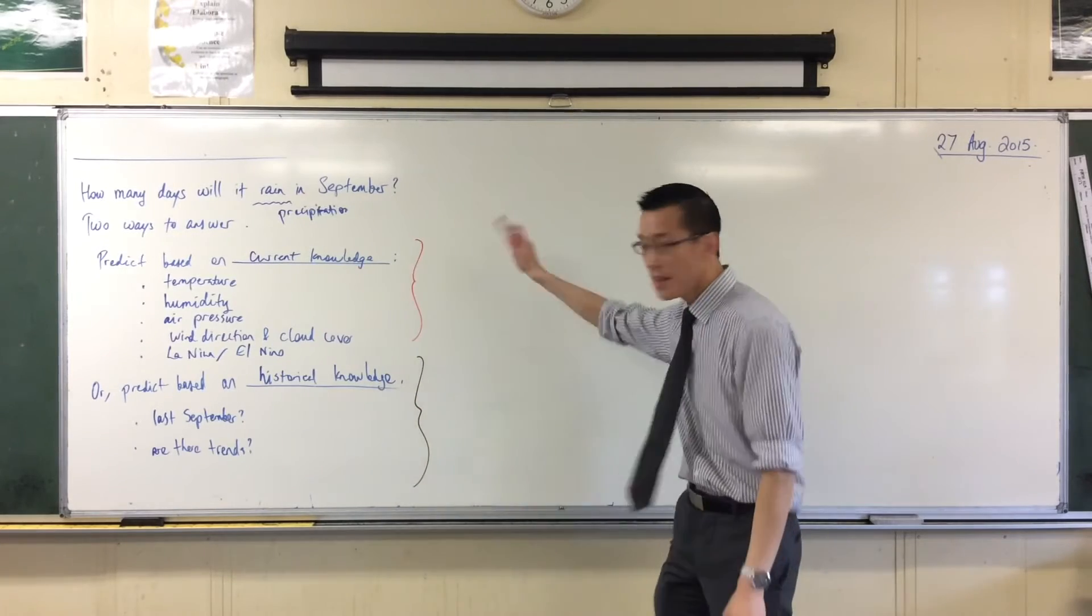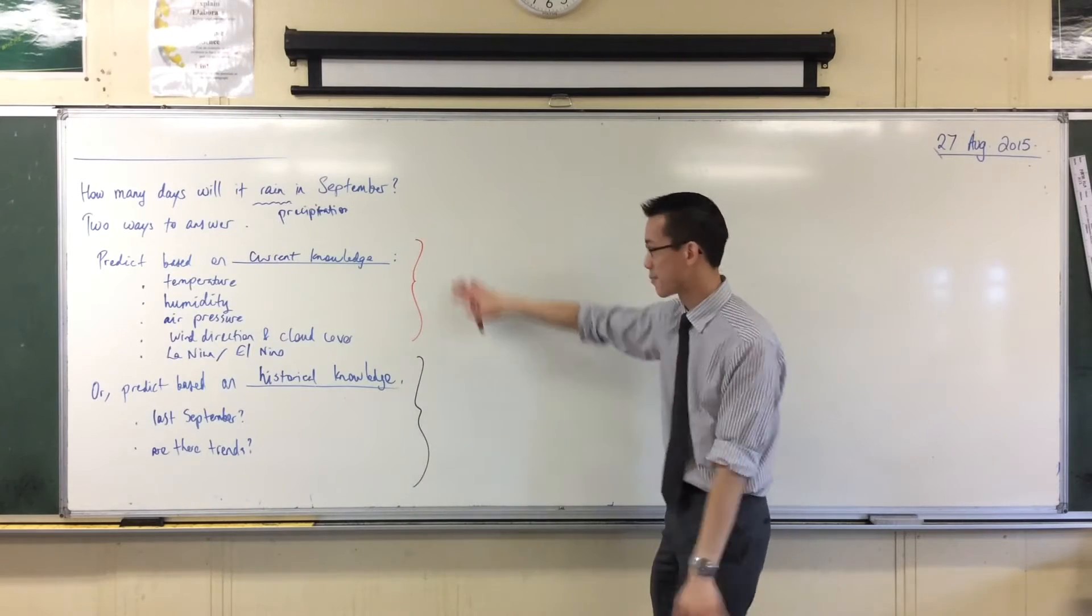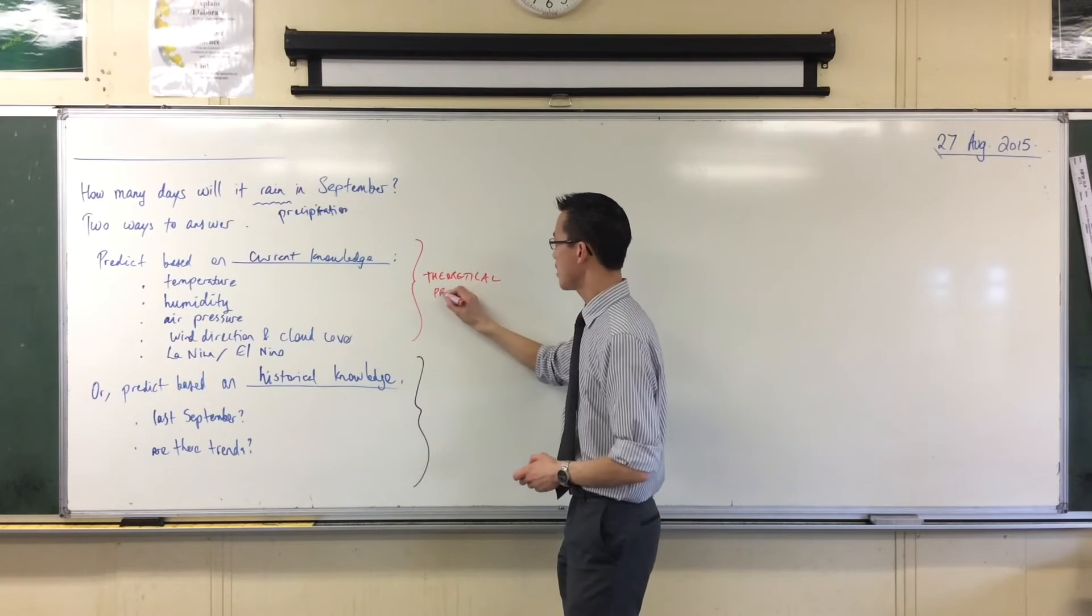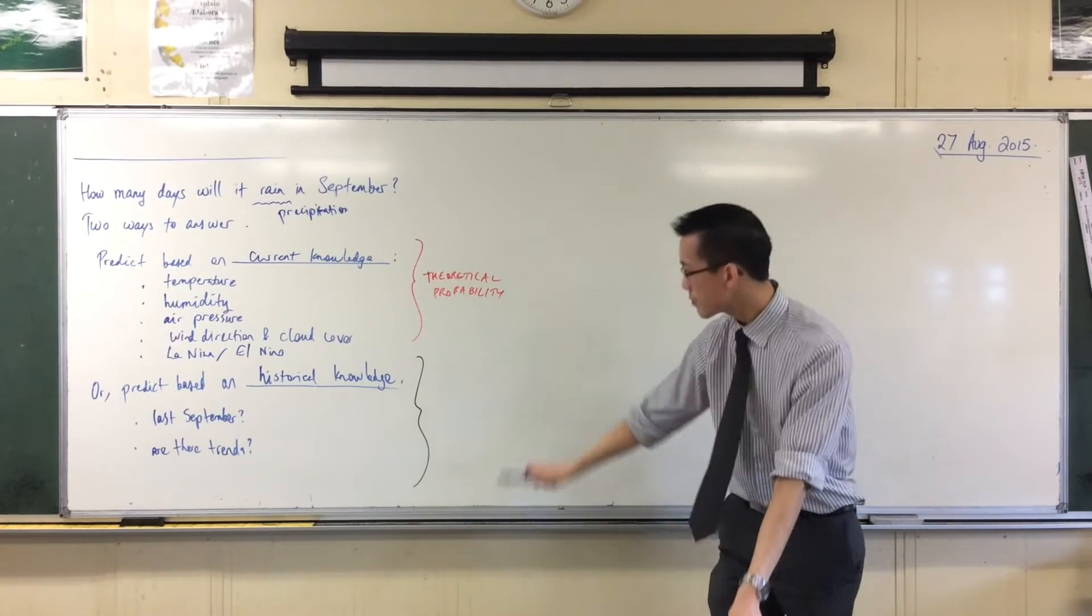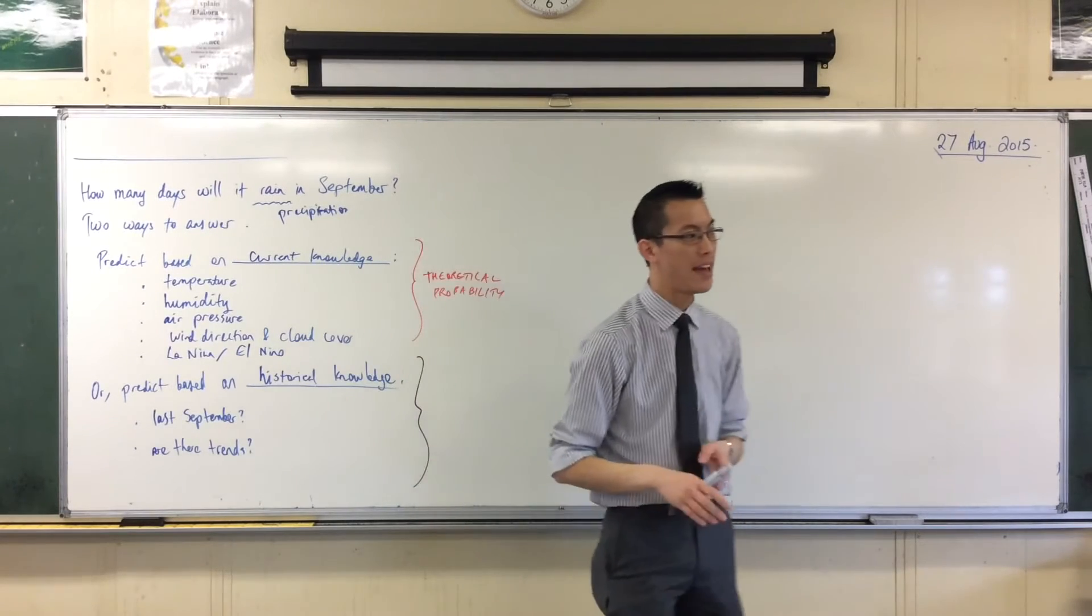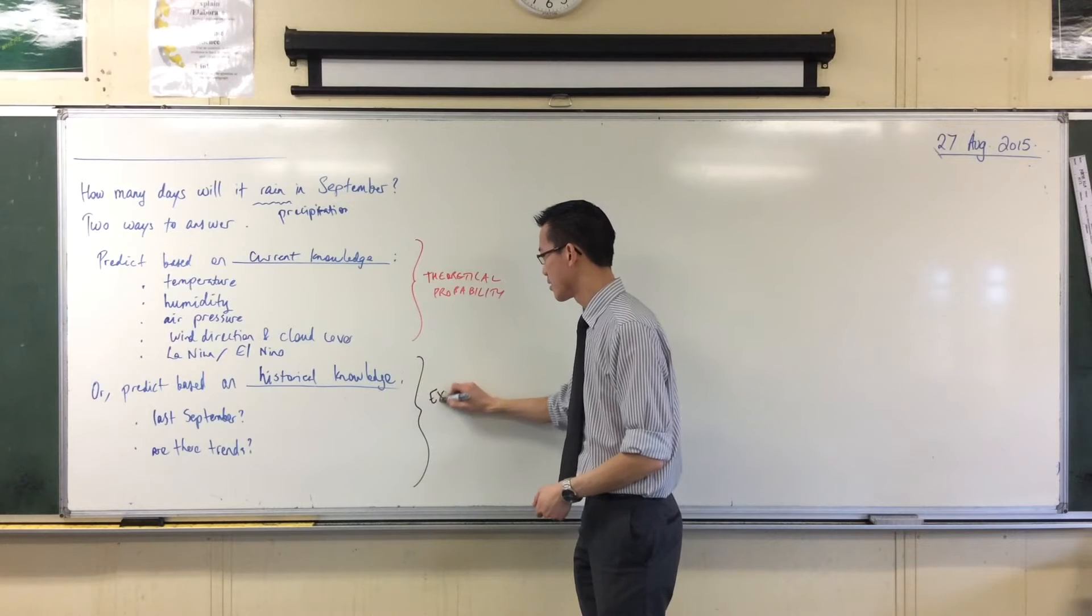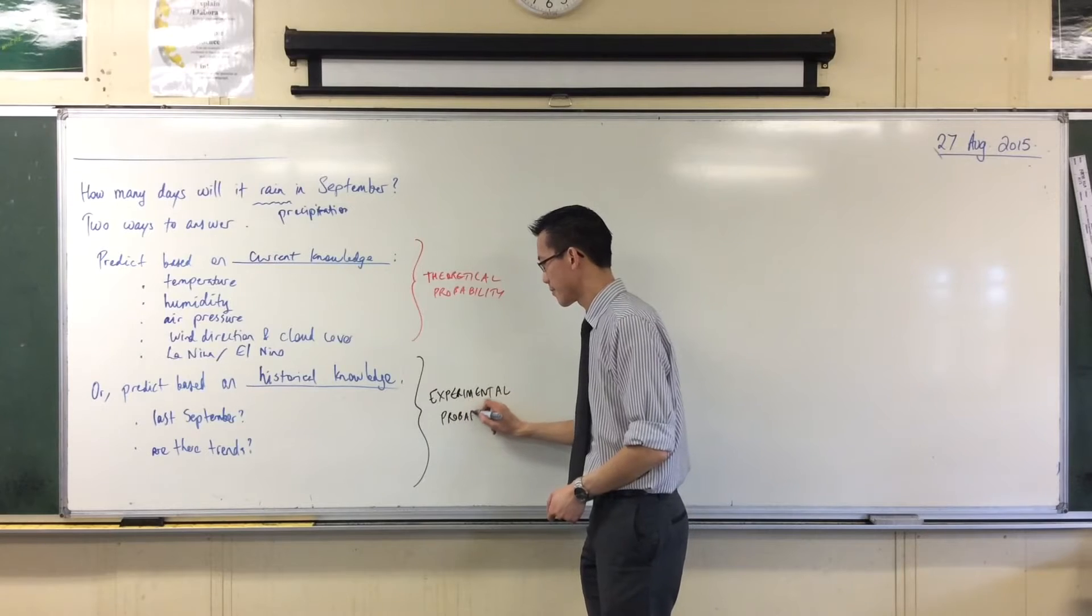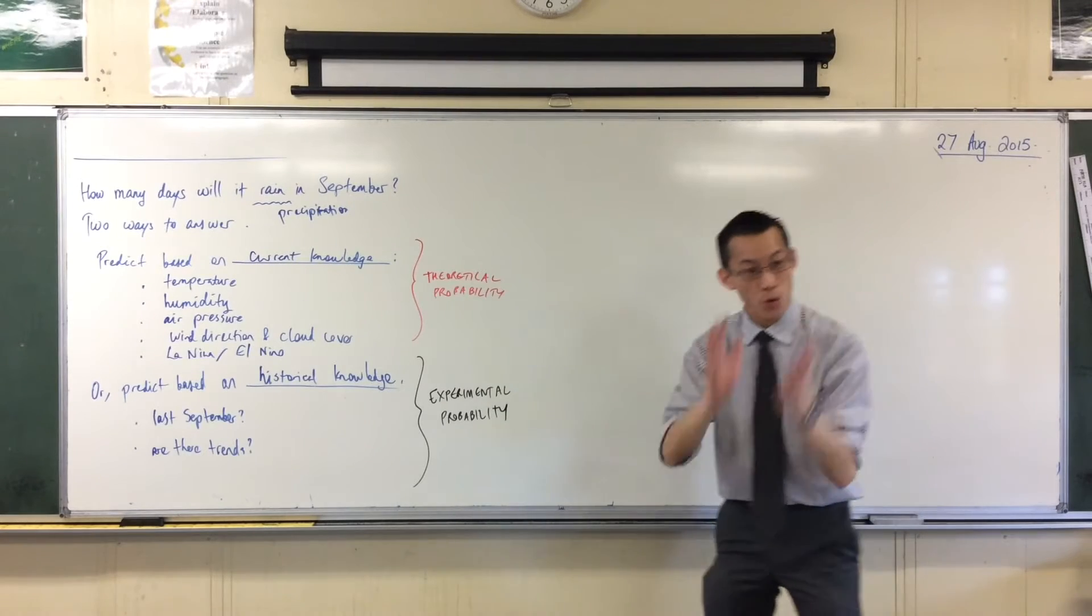These two approaches have different names that you've kind of heard of, but I want to formalize today. This is theoretical probability—in theory, knowing all these things, can we make a guess? This is something quite different—you've run a big scientific experiment and you're looking at the observations, the data you've recorded. We call this experimental probability.